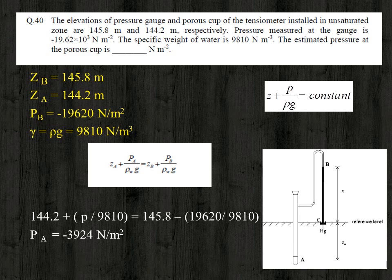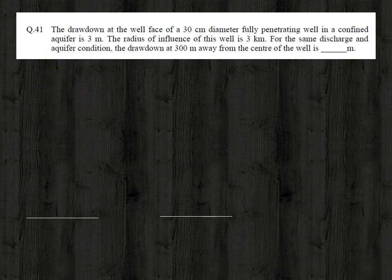The second question: the drawdown at the well face of a 30 centimeter diameter fully penetrating well in a confined aquifer is 3 meter. The radius of influence of this well is 3 km. For the same discharge and aquifer conditions, the drawdown at 300 meter away from the center of the well is dash meter.